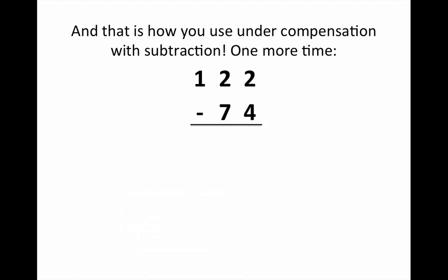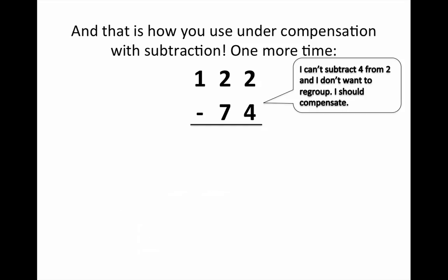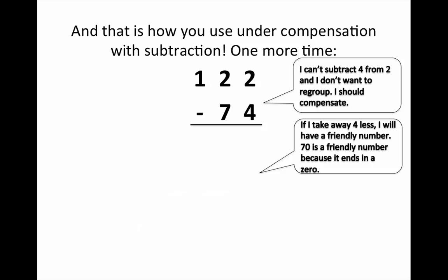We have 122 take away 74. I can't subtract 4 from 2 and I don't want to regroup. I should compensate. If I take away 4 less I'll have a friendly number. 70 is a friendly number because it ends in a zero.